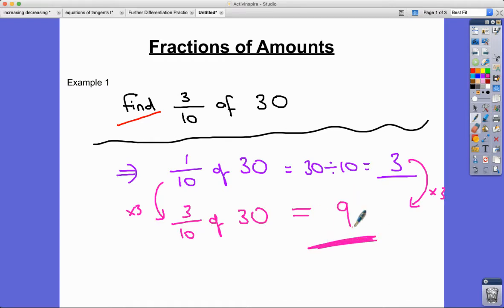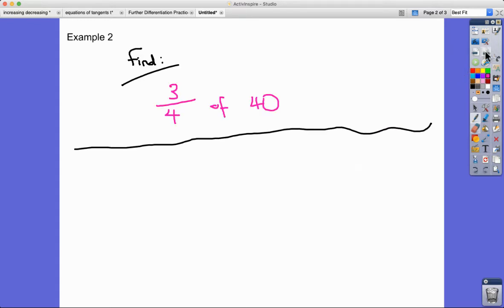That's the first example. We'll move on to the second example now. Same idea - this time we've got find 3/4 of 40. Again, all I'm going to do is just find 1/4 of 40 by thinking: what is 40 divided by 4? 40 divided by 4 is 10.